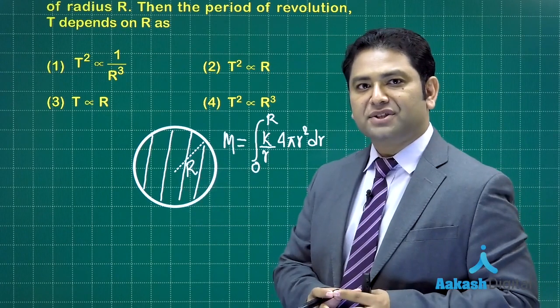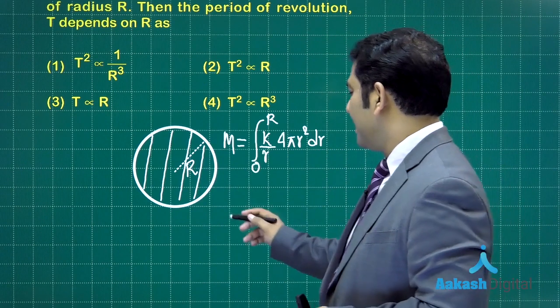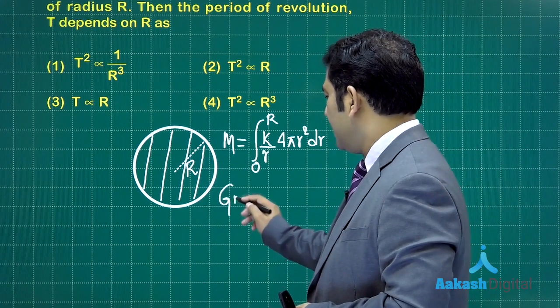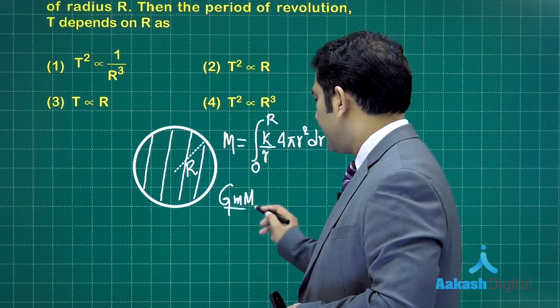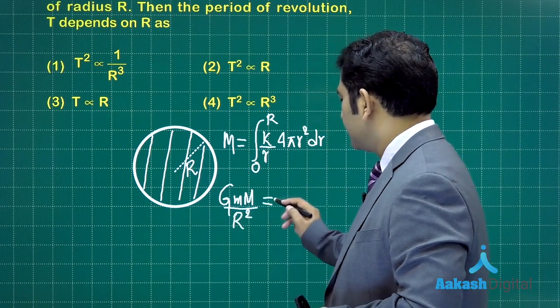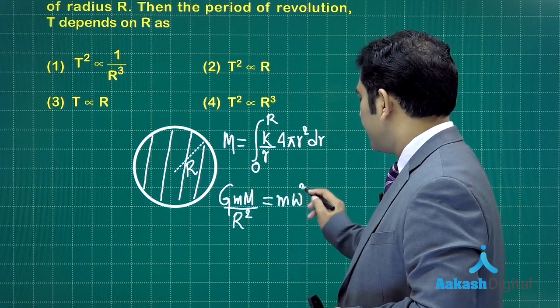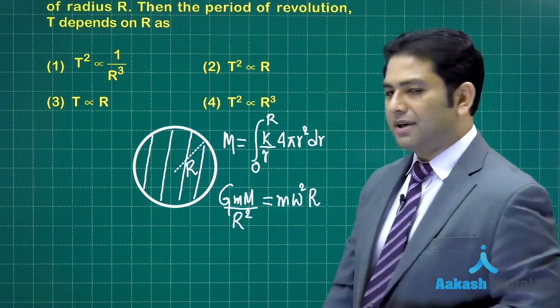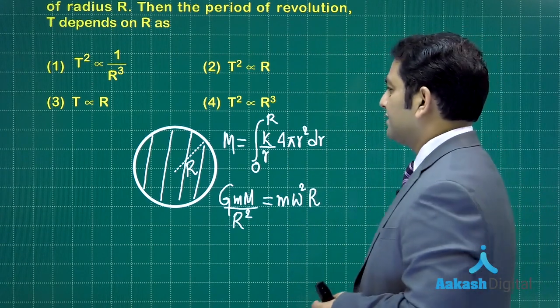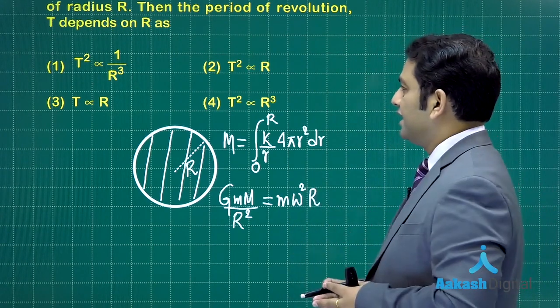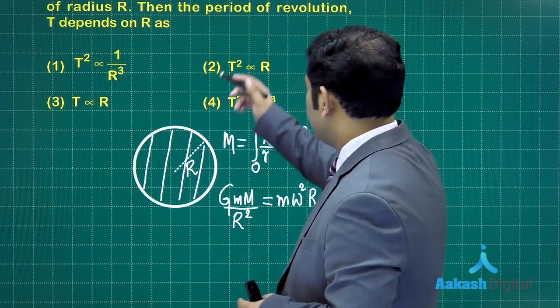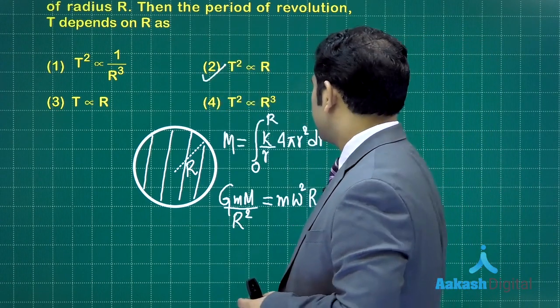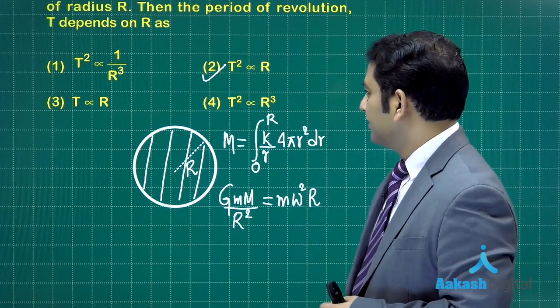This is going to give me the total mass which is enclosed within this particular sphere, the mass of the galaxy. And now once you got the mass, you can see GMm divided by r square that will be equals to m omega square multiplied by capital R.